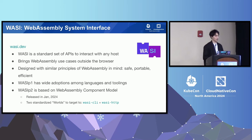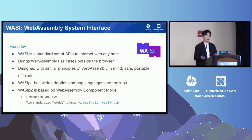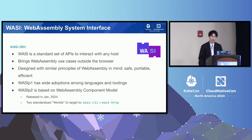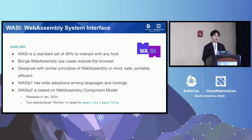WASI is designed with similar principles to WebAssembly: efficiency, safety, and portability. It has a capability model — you don't hand anything from the operating system to a WASI module by default; it's granted by the runtime. For example, a WASI module does not have filesystem access by default — you have to grant that capability. The first public release is WASI Preview 1, or WASI P1, which has wide adoption among languages and toolings. Go introduced a WASI P1 target last year. WASI P2 is the next major iteration, based on the component model, released earlier this year. It has two standardized worlds: WASI CLI that models CLI programs, and WASI HTTP that models an HTTP proxy environment.